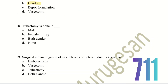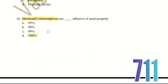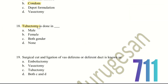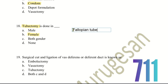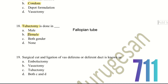Eighteenth question: tubectomy is done in which gender? The choices are male, female, both genders, or none. The right answer is female. Tubectomy is a sterilization method involving the fallopian tube, which is present in females. So the right answer is option B — female.